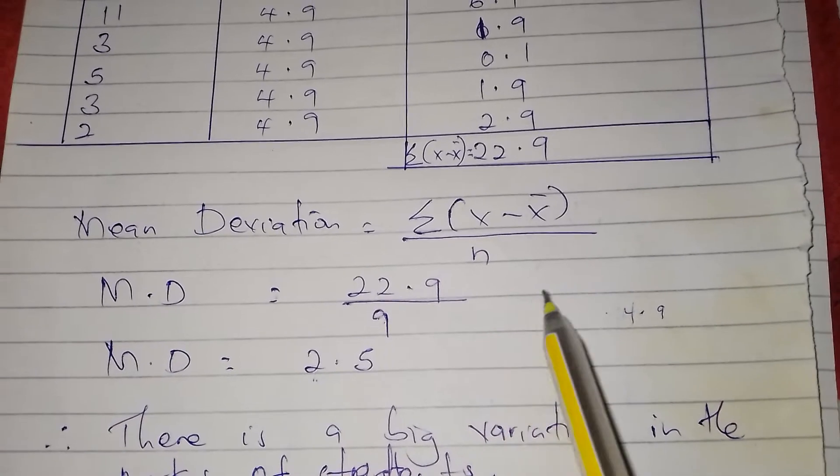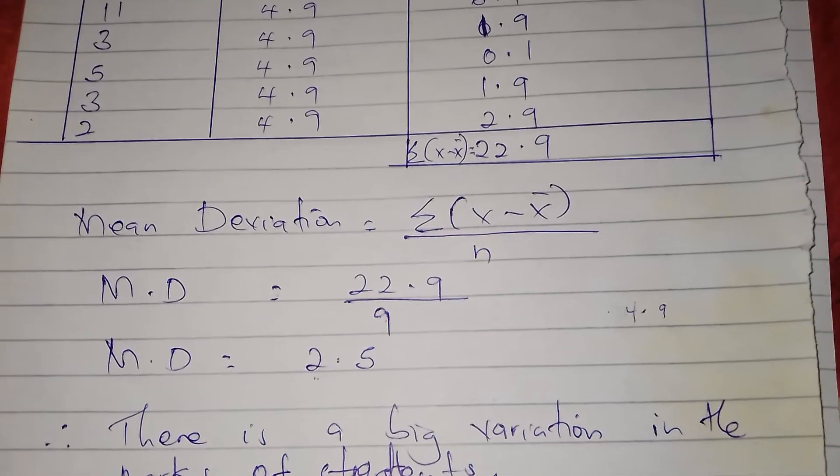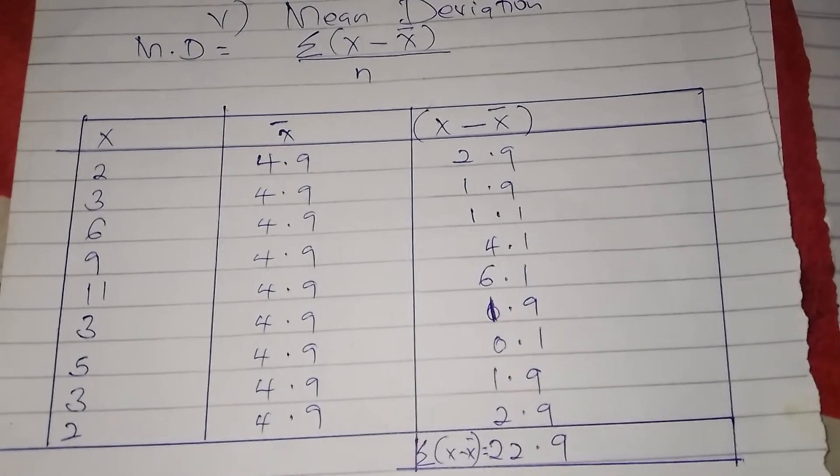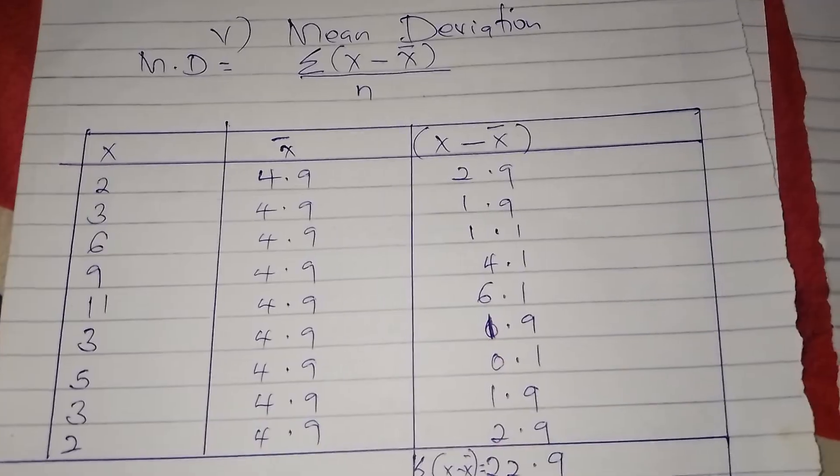So there is a big variation between the marks, because 2.5 is far away from the mean itself which is 4.9. So there is a big variation in the marks of students. Thanks for watching. In the next video we shall be continuing with the measures of dispersion.